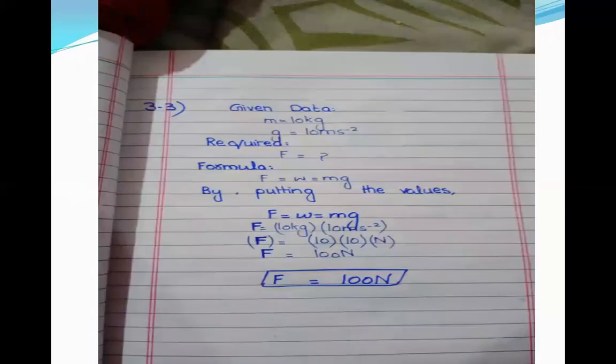Problem 3.3: how much force is needed to prevent a body of mass 10 kg? We want to find force. M equals 10 kg and g equals 10. Using the formula F equals W equals mg, putting values: 10 multiplied by 10 gives F equal to 100 N. This is the answer of the third numerical.